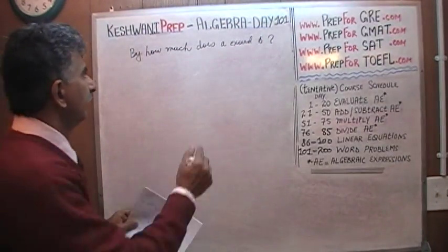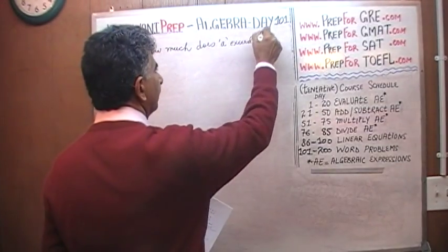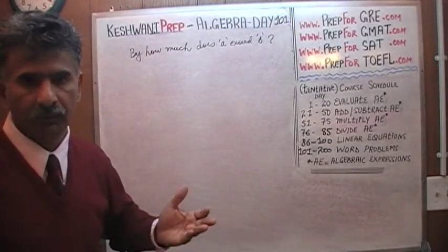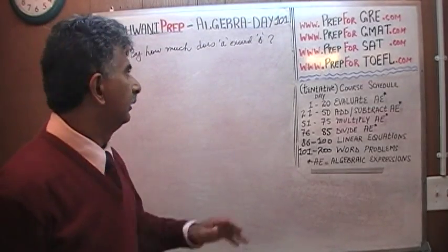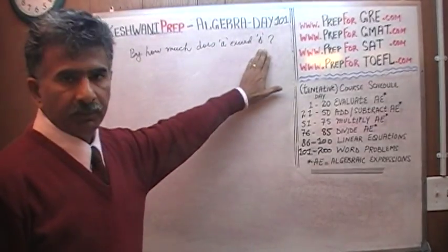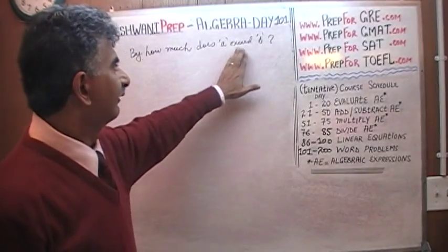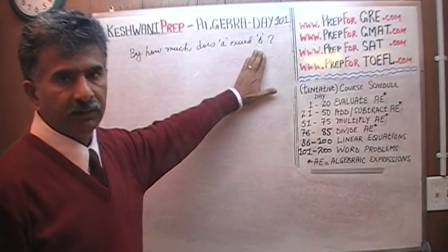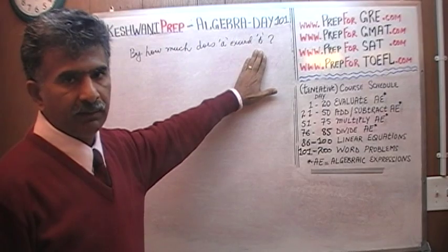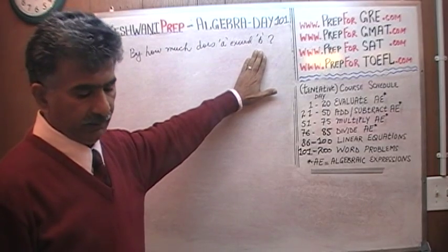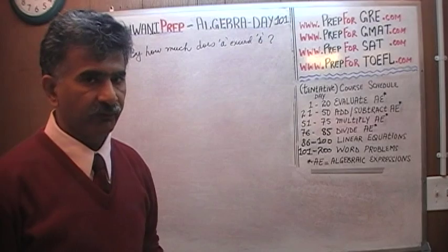Obviously A is some number that we do not know. That's the whole point. This is algebra, not arithmetic. And B is some number. The question simply is, by how much does A exceed B? How do you express this idea in an algebraic manner, in algebra, in the language of algebra? It's very simple, very straightforward.